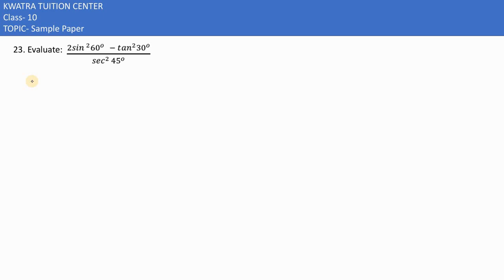Here in this case, they are saying evaluate this expression. So here in this case, it says 2 sine square 60 degree.